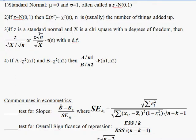The t-distribution was invented by William Gossett because he did not know the population standard deviation. When you're doing statistical testing and you only have an estimate of the standard deviation, an estimate of a standard deviation is a square root of a chi-square, because it's the square root of adding up squared things.